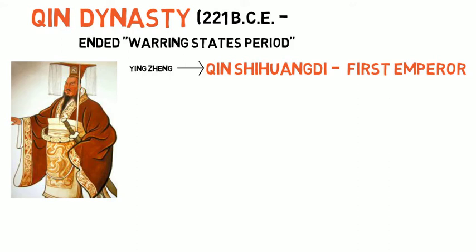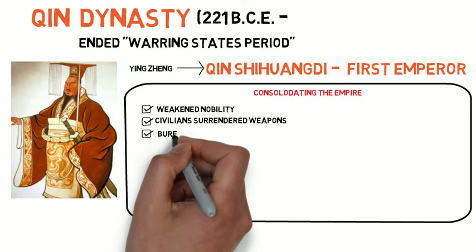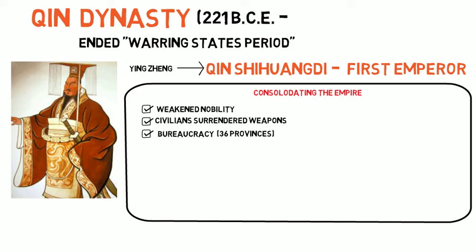The basis for the name China comes from Qin. To consolidate his power, Emperor Qin focused on weakening the power of the nobility by moving them to the Qin capital — in essence, keeping them hostage where he could keep an eye on them. He also ruled that civilians had to surrender all weapons, and Qin organized an administrative bureaucracy by dividing the empire into 36 provinces ruled by people appointed by him. This is similar to the bureaucracy used by the Persian Empire.